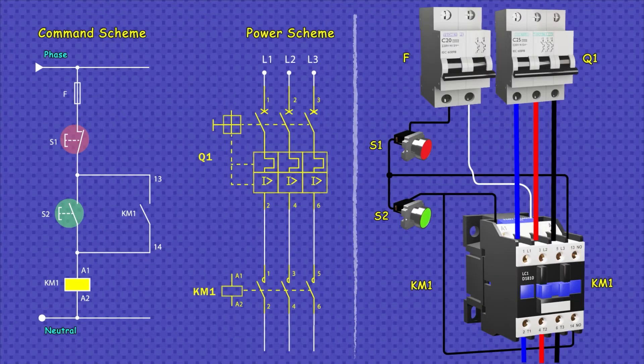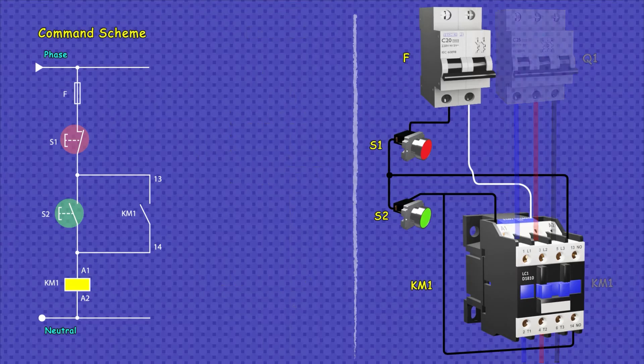The most basic diagram that can be made to use a self-latching contactor is the one shown, where on the left side are the control and power diagrams, and on the right side is the circuit represented with physical elements. The control diagram is made up of the following elements: a thermomagnetic switch, although the symbol indicates that this must be a fuse, a normally closed stop button, a normally open start button, and the contactor coil that would be KM1.